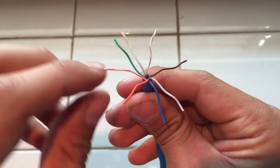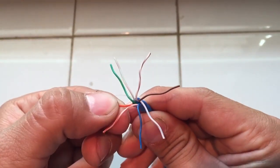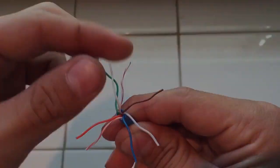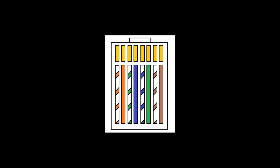Now you're going to untwist your pairs and put them in order. The order is going to be white with the orange stripe, orange, white with the green stripe, blue, white with the blue stripe, green, white with the brown stripe, and then brown.